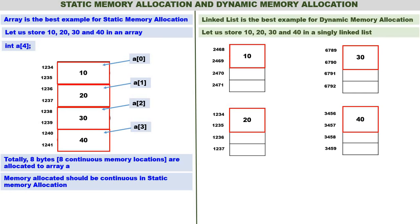They are also not logically connected yet. To build a logical connection, along with 10 we store the address of 20, which is 1234. Along with 20 we store the address of 30, which is 6789.